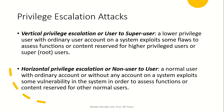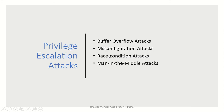In privilege escalation, an attacker first gains the privileges of a low-level user and then tries to gain access to the root user — this is vertical privilege escalation, gaining higher-level access. Horizontally, the attacker gains one user's credentials and then tries to access other users who are at the same privilege level — that is horizontal privilege escalation.